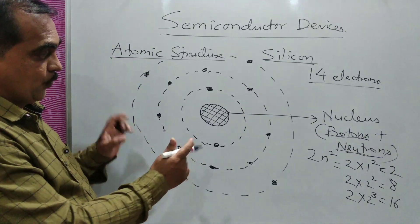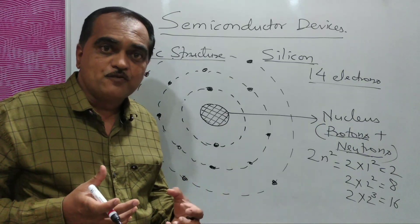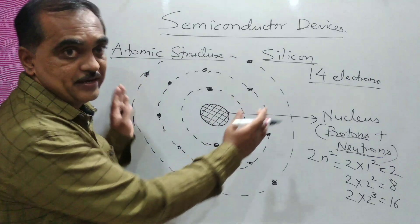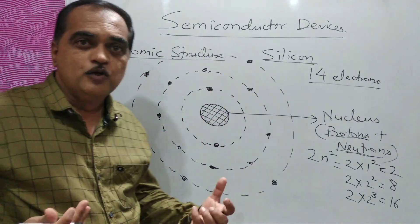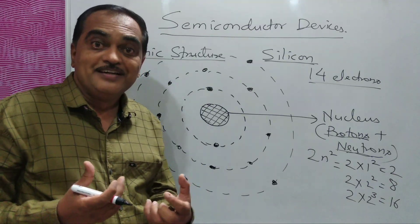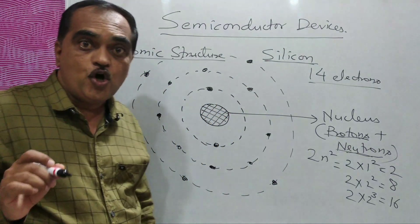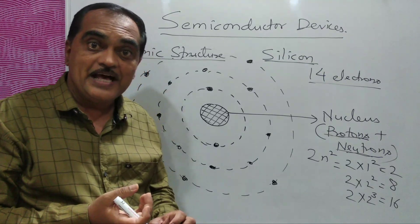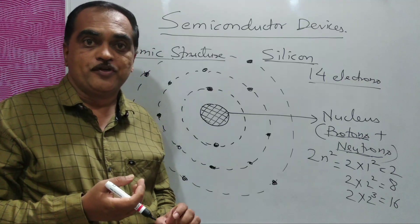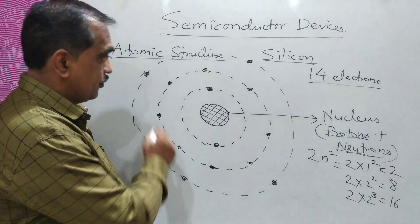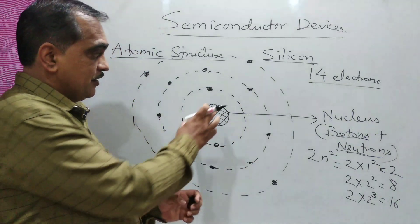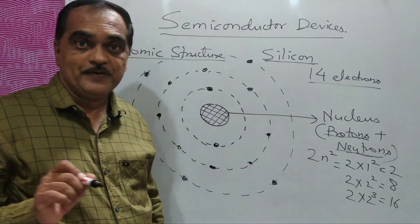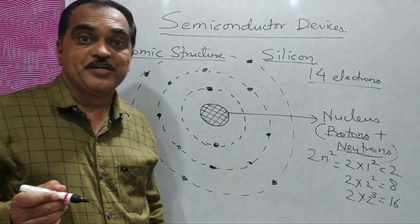Electrons in the inner orbits are very tightly attached to the nucleus, but electrons in the outermost orbit are more loosely attached — the attraction force is less. These outermost electrons are called valence electrons, because if you apply some external force, they can be taken out from the atomic structure. Valence electrons play an important role when we study semiconductor devices.